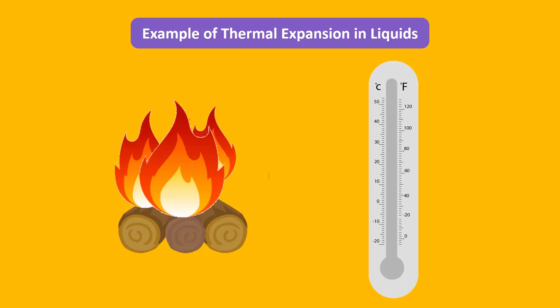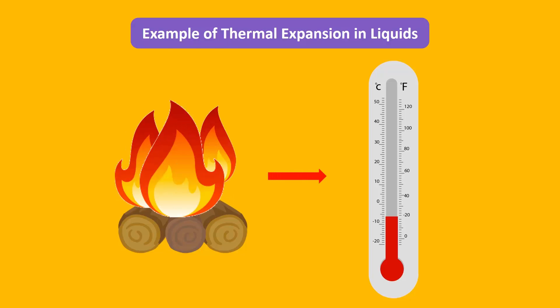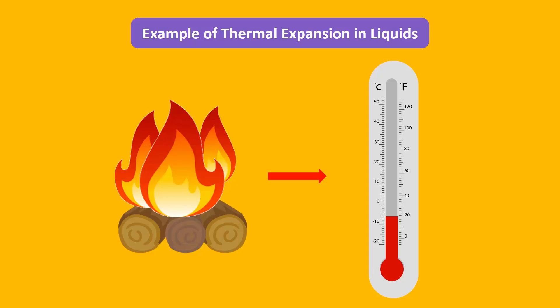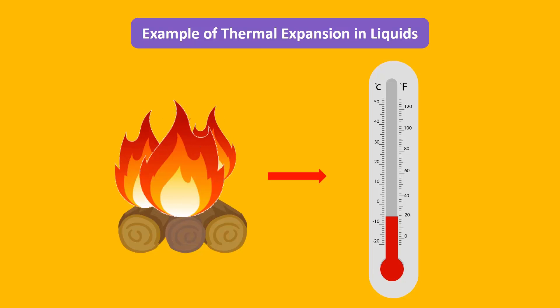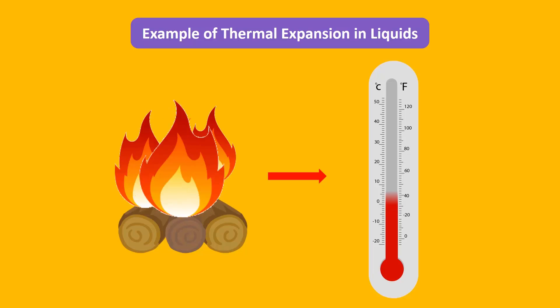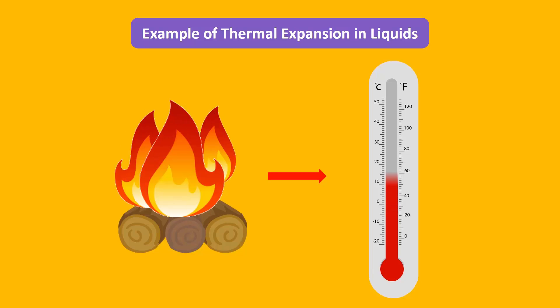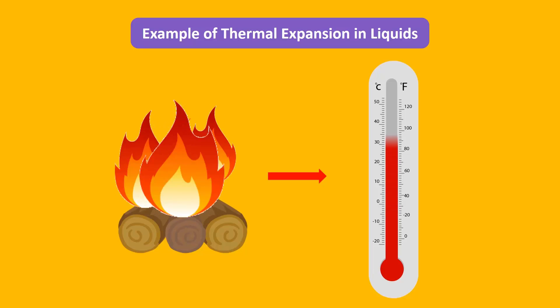A thermometer is an example of expansion in liquids. Mercury is used in a thermometer — when we increase the temperature, the mercury starts to expand and we can clearly see an increase in the level of mercury.